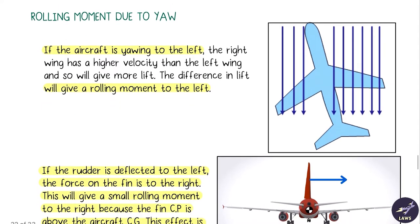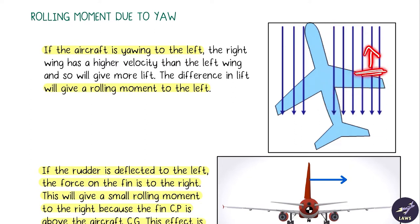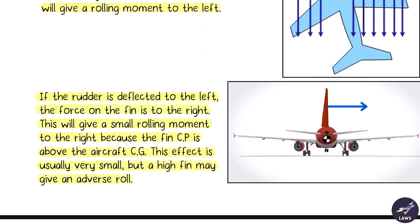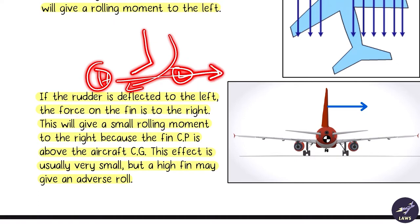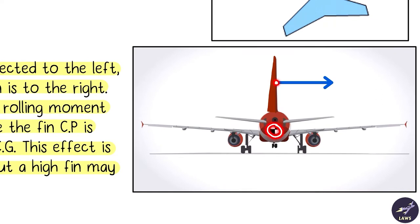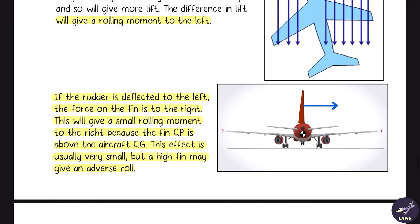Next is the rolling moment due to yaw. If the aircraft is yawing to the left, more airflow goes over the right side of the aircraft, increasing lift on the right side, so when yawing left you also roll left. There is another effect: if the rudder is deflected to the left, the resulting force on the fin acts to the right. Since the center of pressure of the fin is above the center of gravity, there is a tendency for the aircraft to roll in the opposite direction. However, this effect is usually very small and is not a concern.